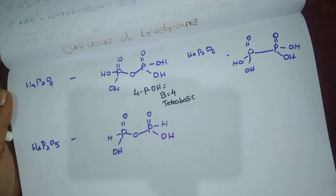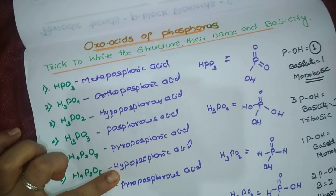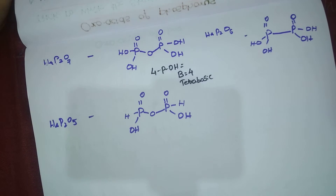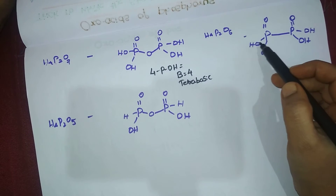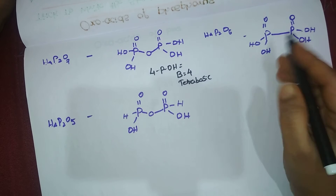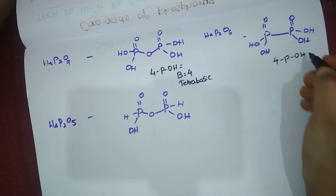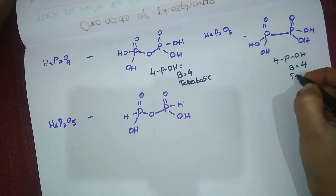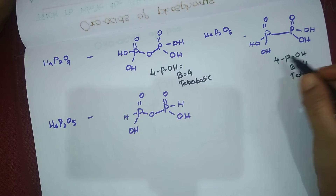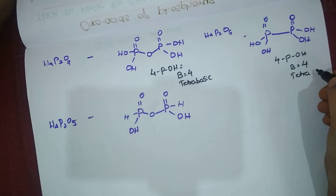Next is H₄P₂O₆, hypophosphoric acid. Counting the P-OH bonds: 1, 2, 3, 4. Again we have four P-OH bonds, so the basicity is 4 and it is also tetrabasic in nature.